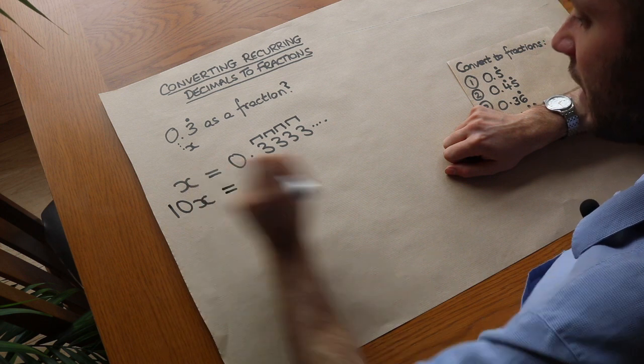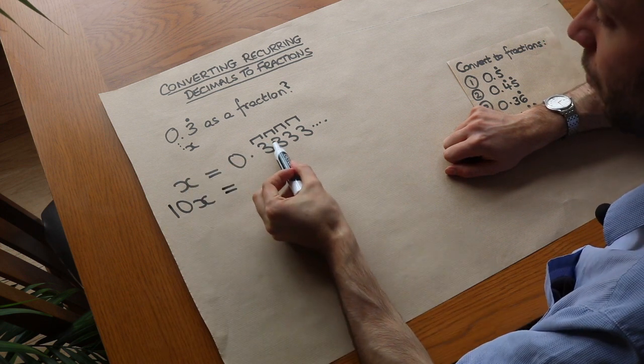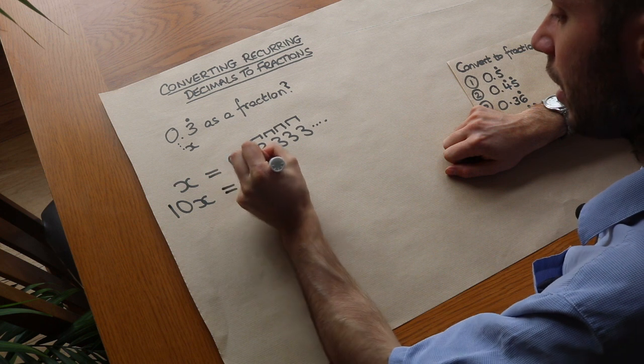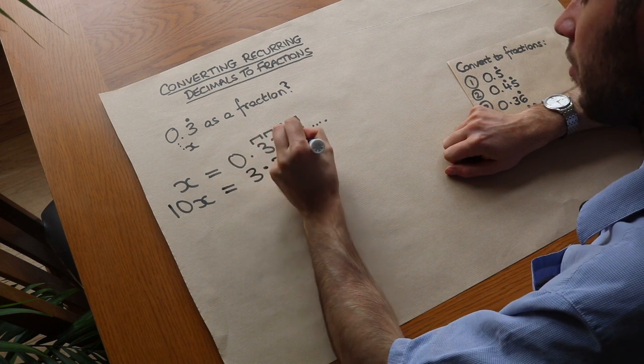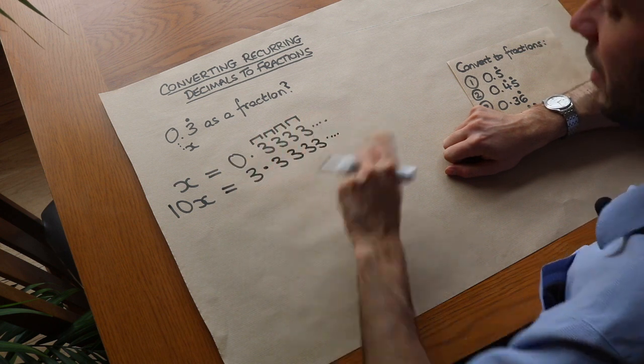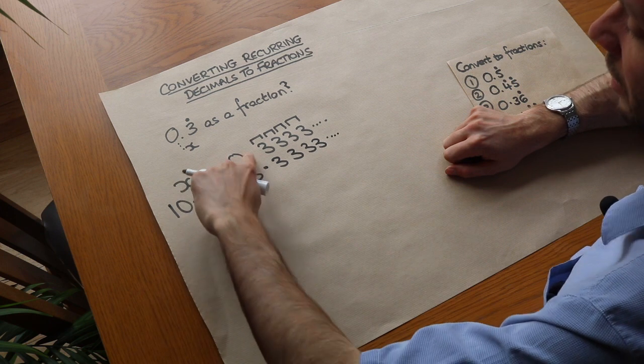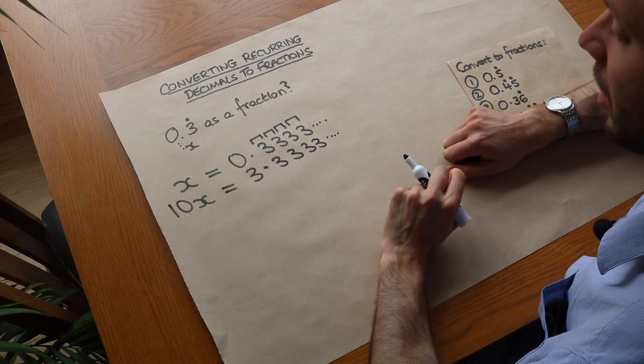You'll see where this is going later. Now when we times this by 10 it moves the decimal point one place. So we get 3.33333 etc. And it's very important that you make these decimal points line up otherwise it makes the next step much more difficult.